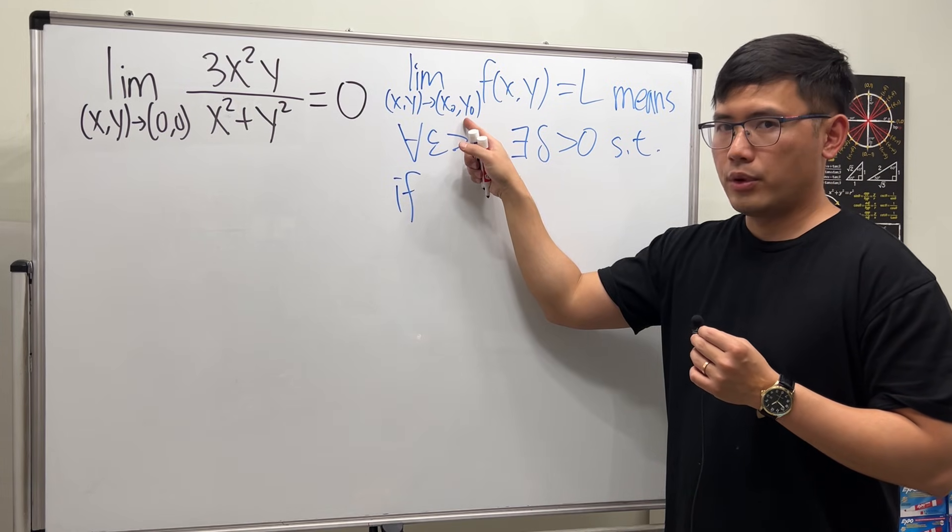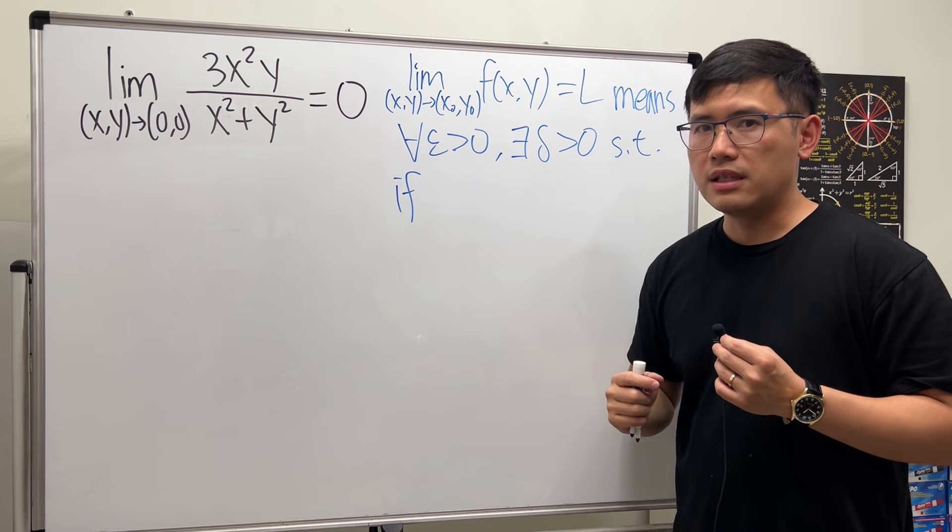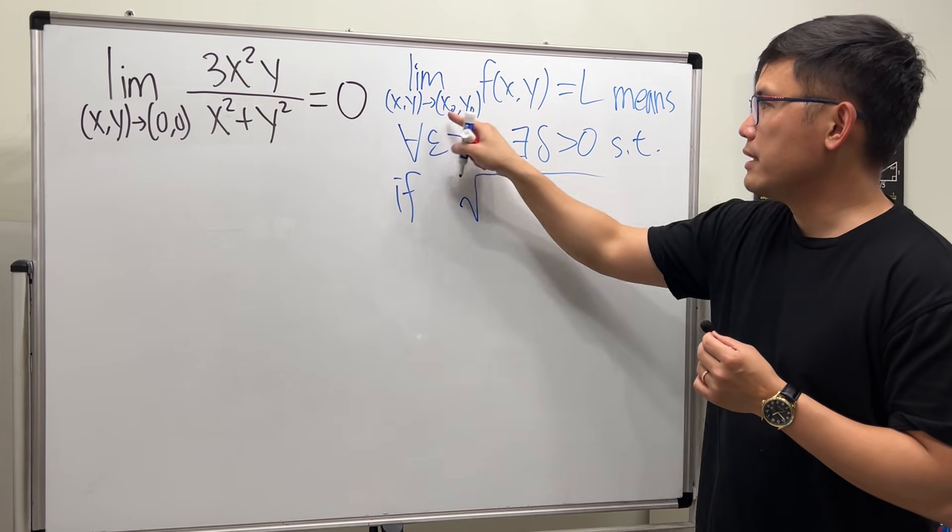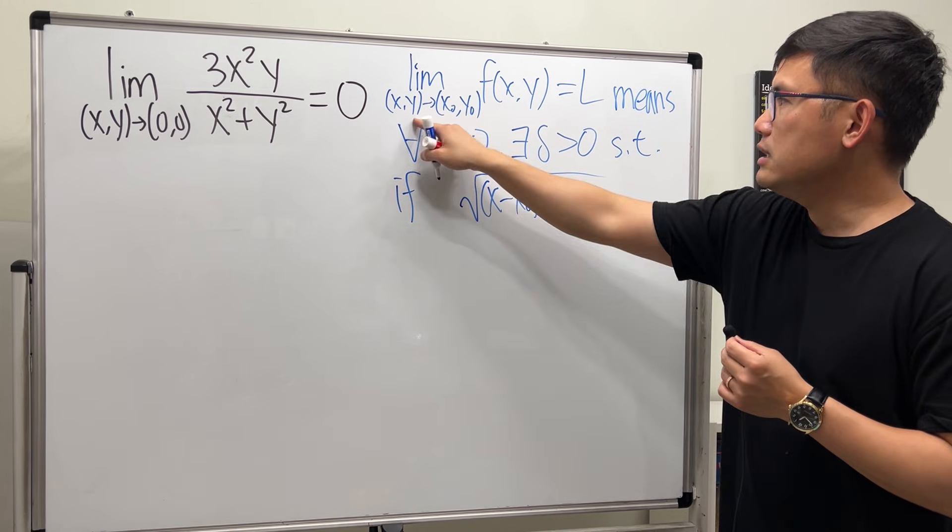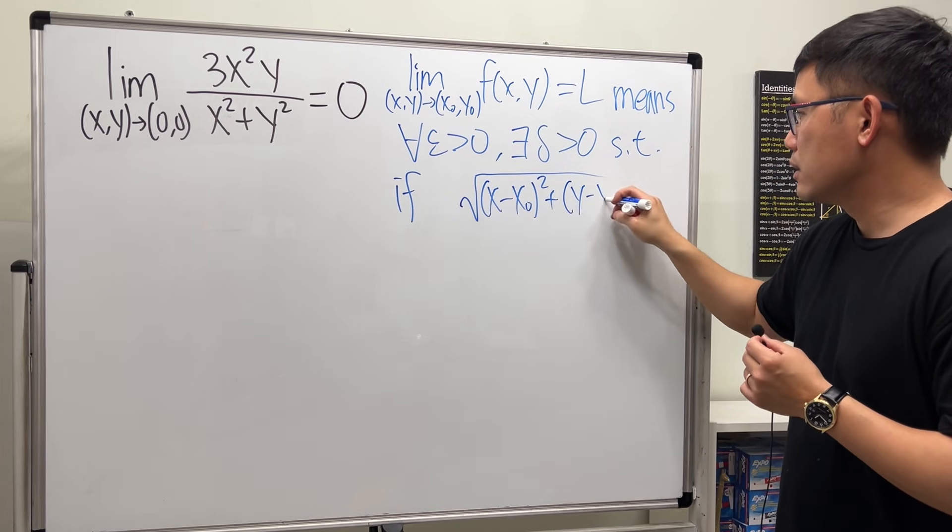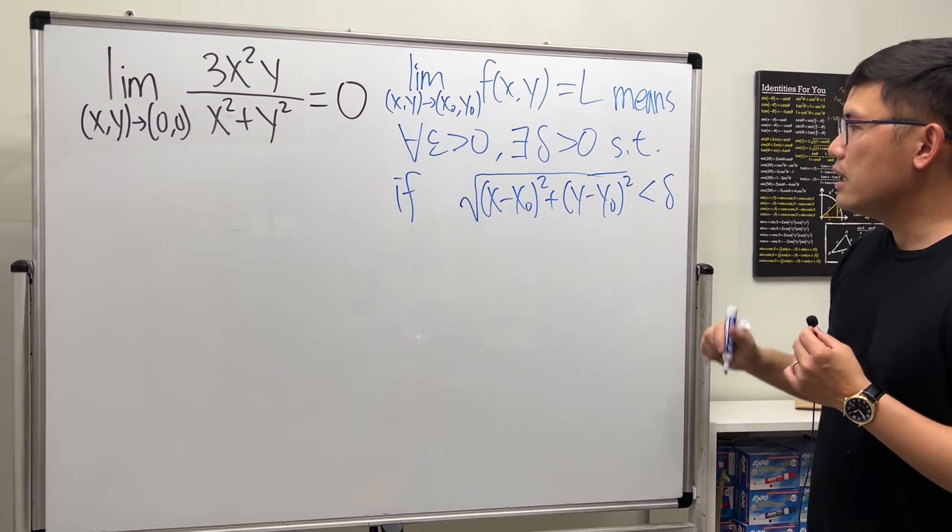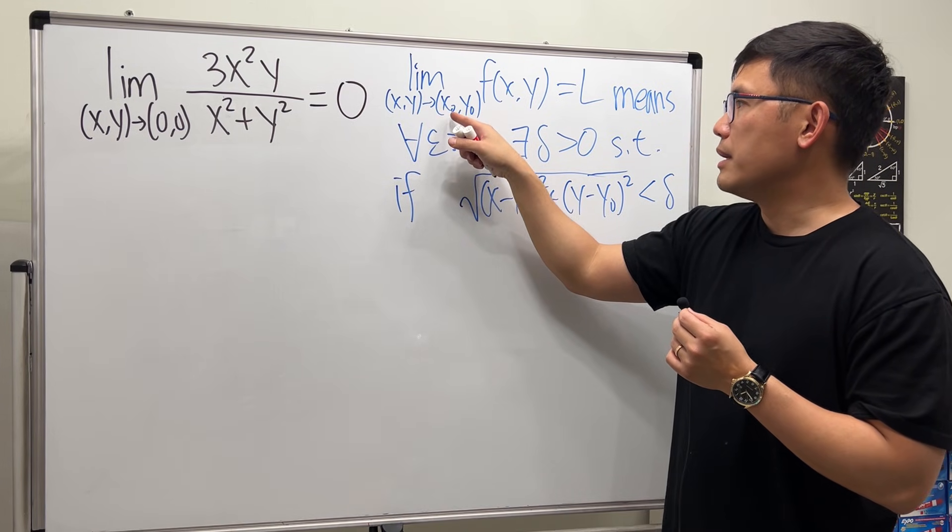Here we have a point and a point. The distance between two points, we have to utilize the distance formula, which is the square root. And we can do (x minus x0) squared, and then we add (y minus y0) squared.